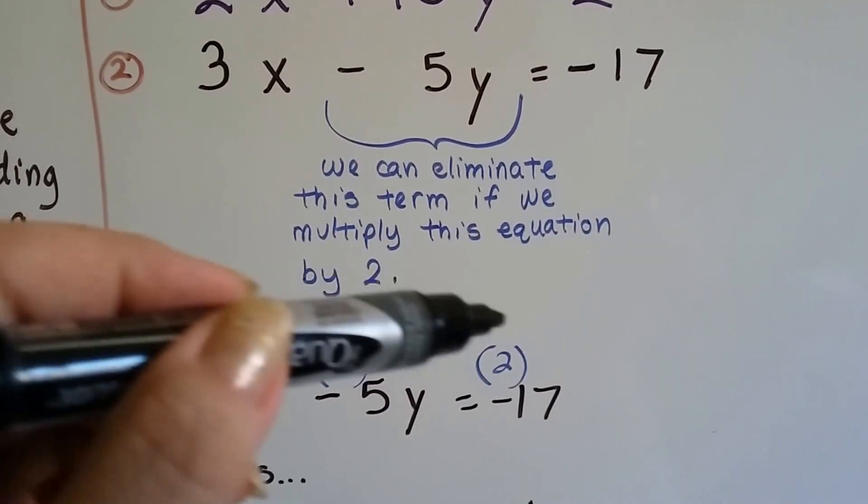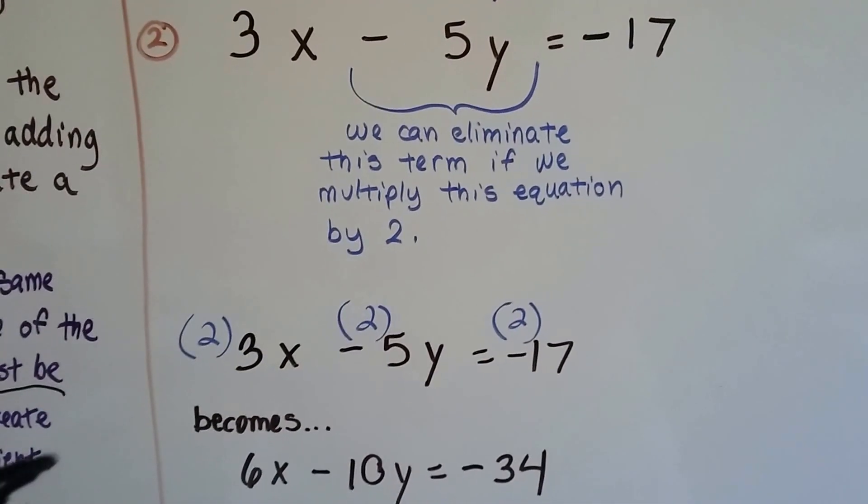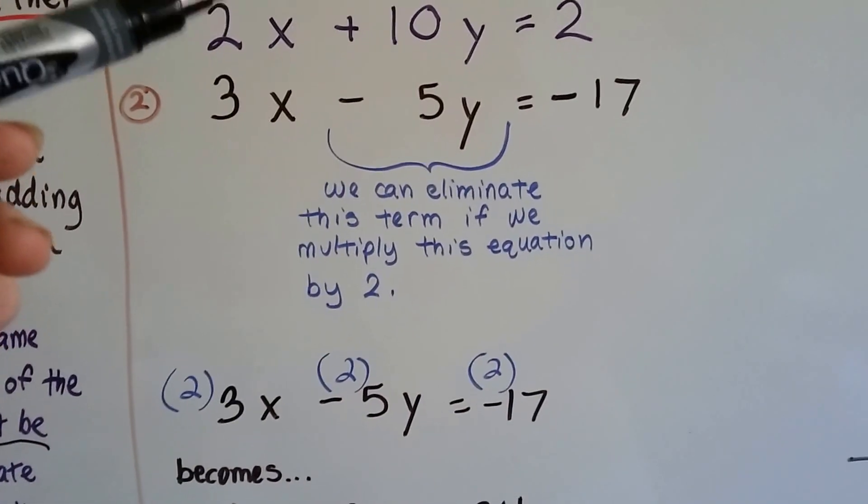We multiply each term by 2 to raise the entire equation up by 2. We leave this one alone.